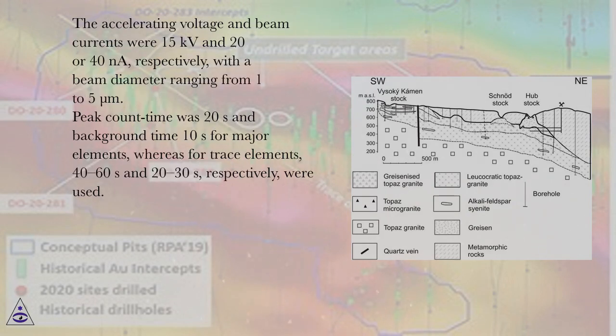The accelerating voltage and beam currents were 15 kilovolts and 20 or 40 nanoamperes, respectively, with a beam diameter ranging from 1 to 5 micrometers. Peak count time was 20 seconds and background time 10 seconds for major elements, whereas for trace elements, 40 to 60 seconds and 20 to 30 seconds, respectively, were used.